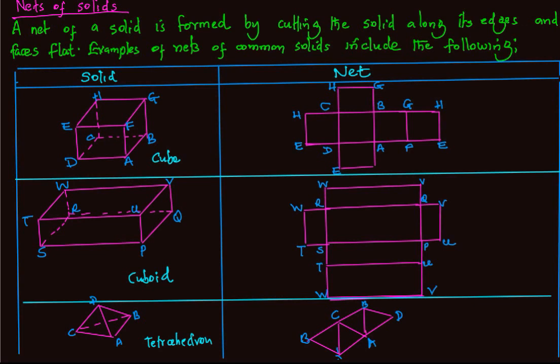The table below illustrates examples of nets of common solids. The first solid is a cube. When the cube is cut along its edges, we get its net which shall be six squares.